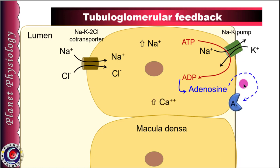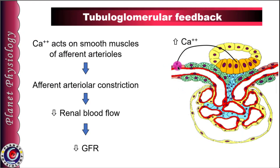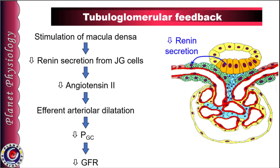This adenosine diffuses out from the basolateral surface of the macula densa and acts on A1 receptors in an autocrine manner to release calcium ions. Calcium ions act on smooth muscles of afferent arterioles causing their constriction, reducing glomerular blood flow and hence GFR. Stimulation of macula densa also decreases renin secretion from JG cells, most probably through nitric oxide. As a result, production of angiotensin II decreases, causing efferent arteriolar dilation, which reduces hydrostatic pressure in the glomerular capillaries and hence GFR.